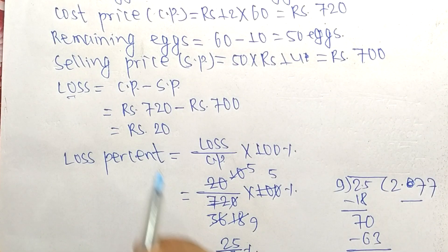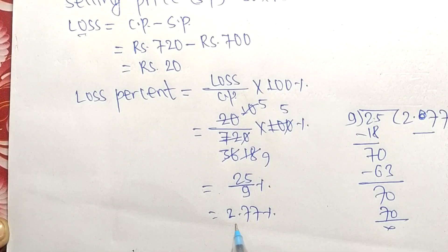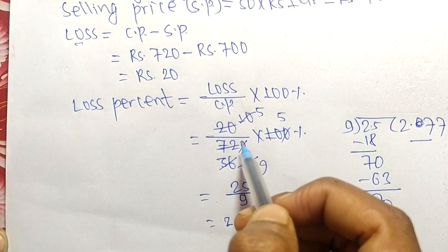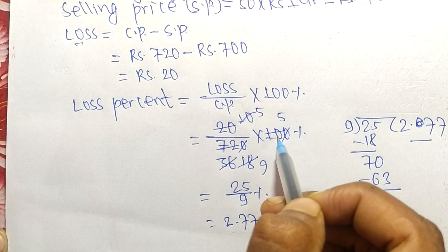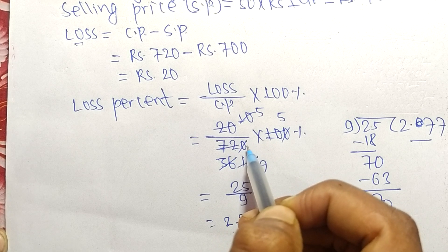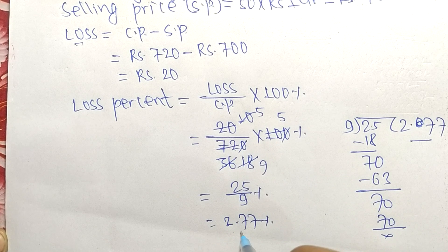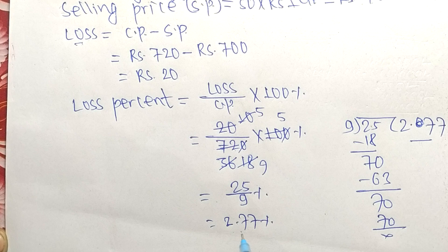The total loss is Rs 20, and the loss percentage is 2.77% in decimal or 25/9 percent in fraction form. Alternatively, we can multiply 20 and 100, then divide by 720 to get 2.77%. That's all for today. Thanks for watching.